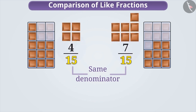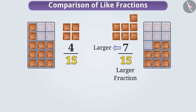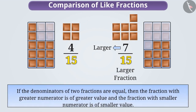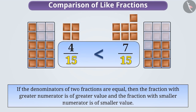Since the numerator represents the number of parts that are taken, the fraction whose numerator is greater will be the greater fraction. Therefore, for any two fractions whose denominators are equal, the fraction with the greater numerator is of greater value. Since the numerator 7 of 7 by 15 is greater than the numerator 4 of 4 by 15, therefore the fraction 7 by 15 is greater than 4 by 15.